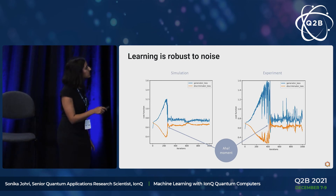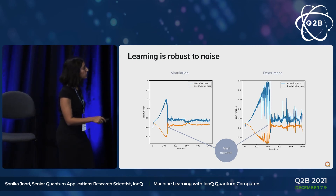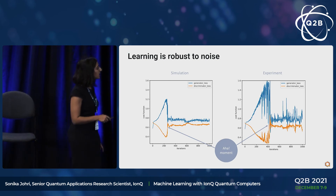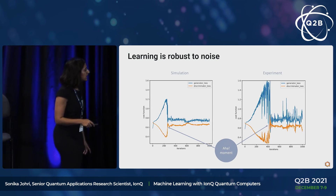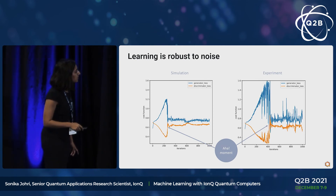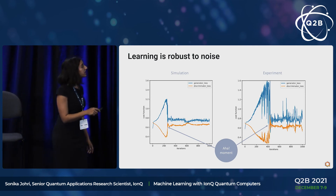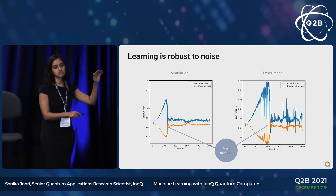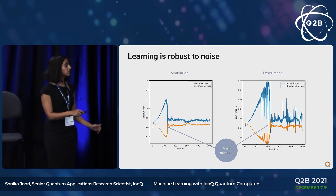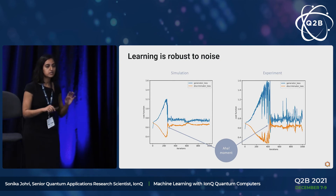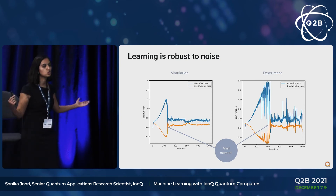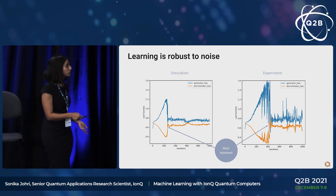What happens when you go from simulation to experiment? These results are from our last-generation quantum computer. On the simulator, convergence occurs around 300 iterations; on the real quantum hardware, convergence occurs around 400–500 iterations. All the noise does is delay convergence — it does not destroy it. The learning is robust to small amounts of noise, though of course with too much noise it would never converge at all.